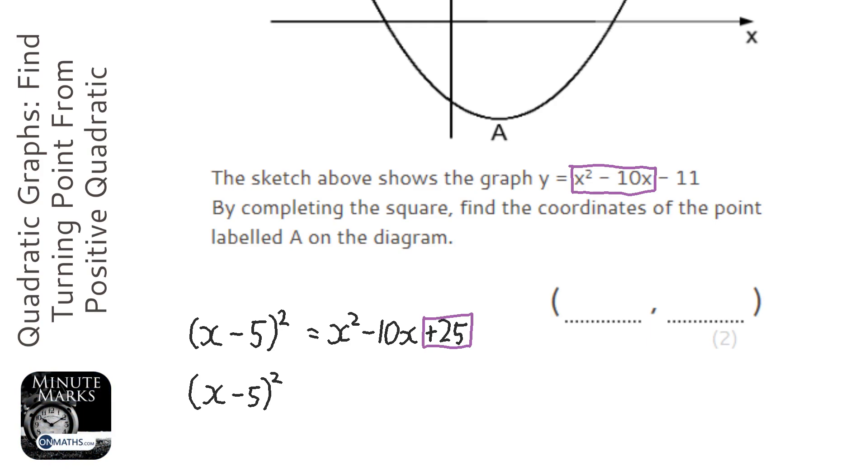So the last bit of completing the square is to remove the square of the second term inside the bracket. So we just take away 25, and we need to include this bit at the end. Let's put those two number terms together, so we've got x minus 5 squared, and then it's minus 25 minus 11, which is minus 36.